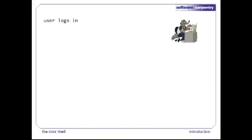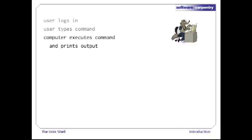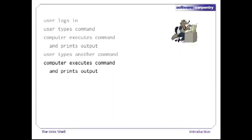Normally, a user starts a CLUE session by logging in with a user ID and a password. The user then types a command. The computer executes the command and prints its output — in the case of older terminals, literally printing the output onto paper a line at a time. The user then types another command, which the computer executes, displaying output, and so on until the user logs off and takes his or her roll of paper away to study.